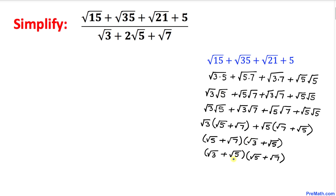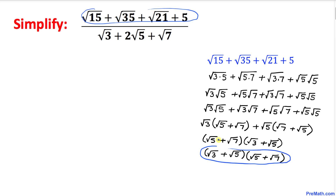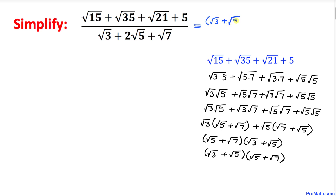I've reshuffled the order — it doesn't make any difference. Replacing the numerator with this simplified form, we get: numerator equals (square root of 3 plus square root of 5) times (square root of 5 plus square root of 7).